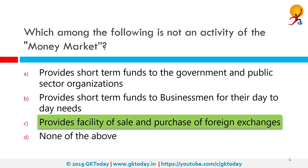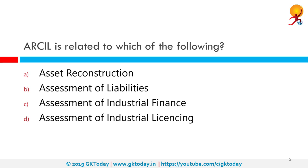Which among the following is not an activity of the money market? The correct answer is that it provides the facility for sale and purchase of foreign exchange. As money became a commodity, the money market became a component of the financial market for assets involved in short-term borrowing, lending, buying and selling with original maturities of one year or less. Trading in money markets is done over the counter and is wholesale.